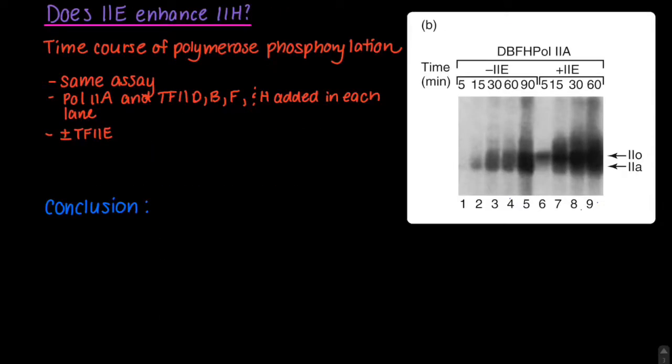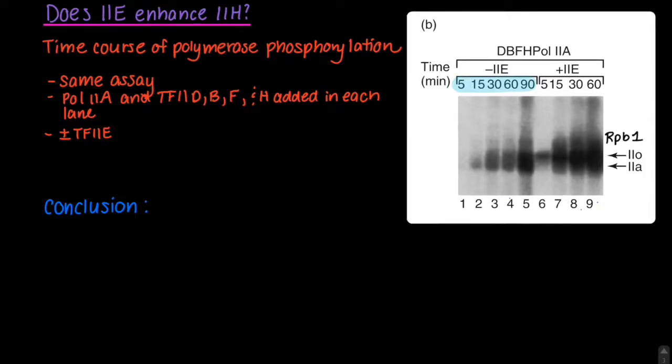For this next experiment, the same phosphorylation assay was performed. This time, Pol 2A, TF2D, B, F, and H were all added. In lanes 1 through 5, TF2E was not added, while in lanes 6 through 9, TF2E was added. A time course of polymerase phosphorylation is shown on the gel from 5 to 90 minutes for the minus 2E condition, and from 5 to 60 minutes for the plus 2E condition.